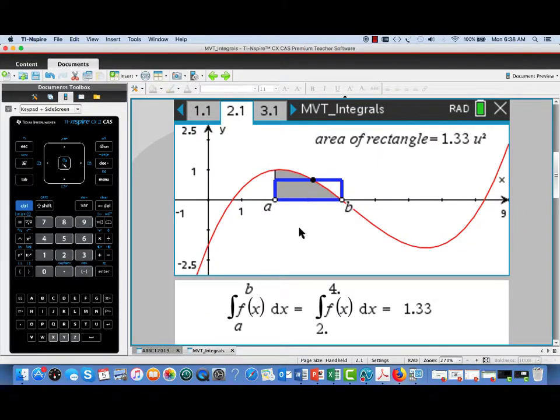It shows the graph of a function y equals f of x graphed in red. And we also have two movable limits of integration a and b. The values of these two limits of integration are a equals 2 and b equals 4.